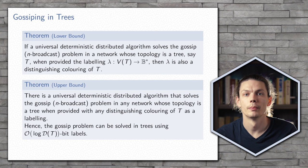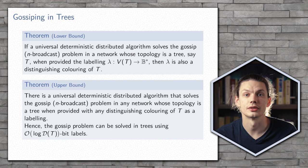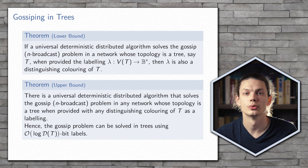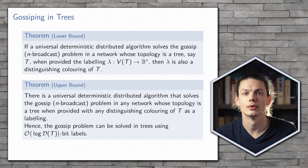We were also able to prove that any distinguishing colouring is sufficient to complete the K-broadcast or gossiping in a tree. That gives us an upper bound of O(log D_T). The way this algorithm works is similar to our tree algorithm, and the root node will transmit an initialised message out to the leaves, and the leaves will then transmit a collect message back towards the root.